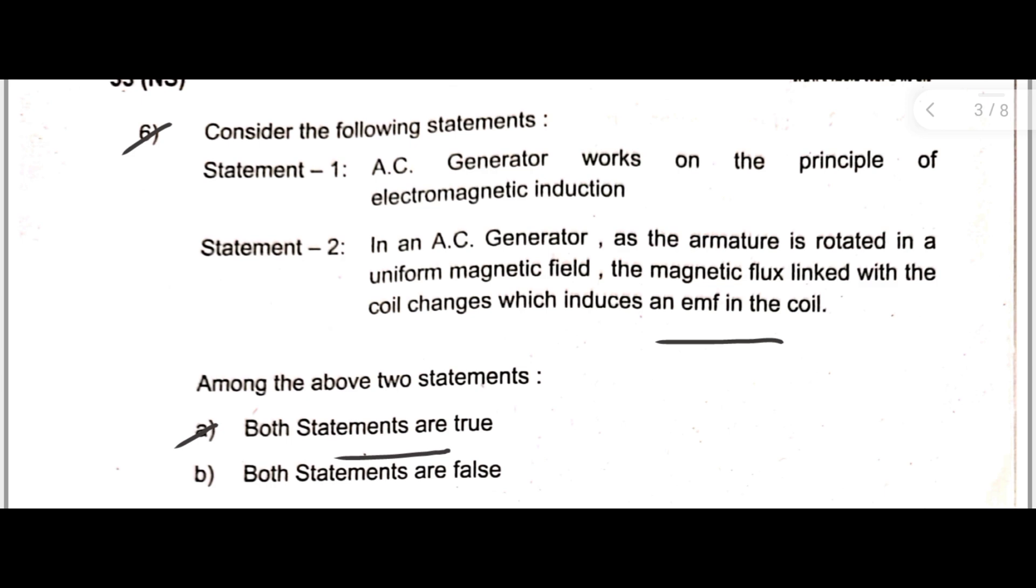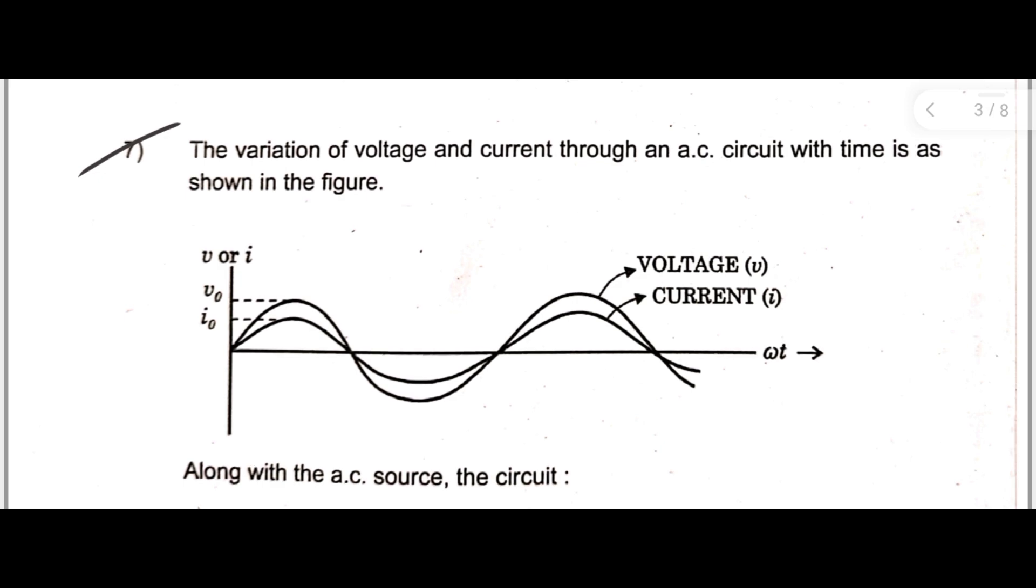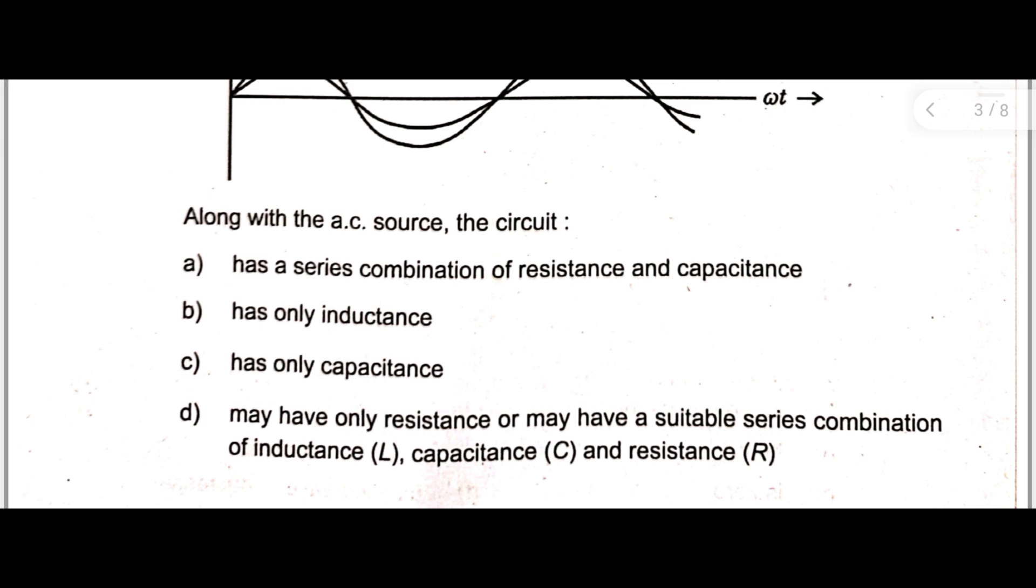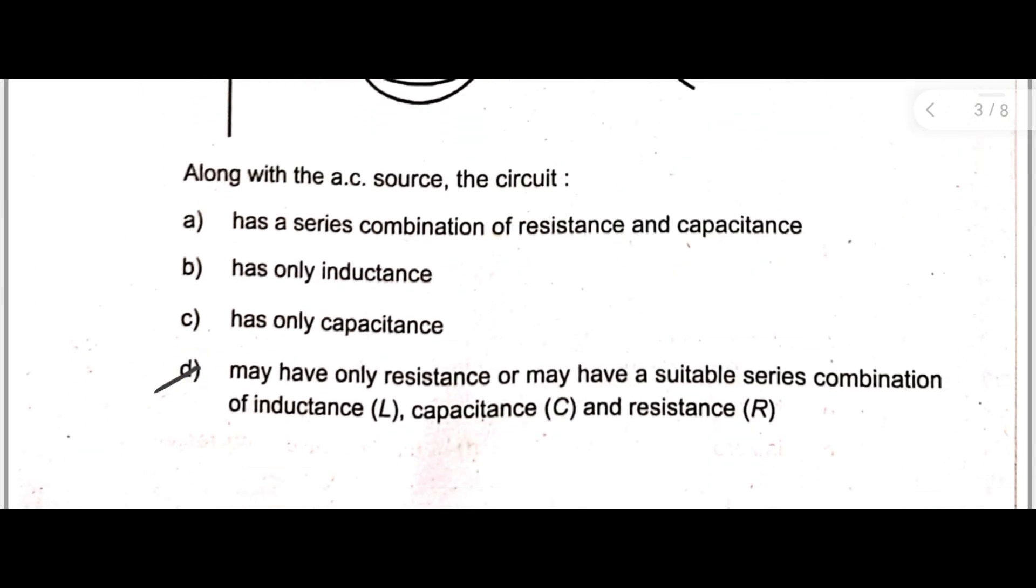Next, question number seven. The variation of voltage and current through an AC circuit with time is as shown in the figure. Along with the AC source, the circuit - option A: has a series combination of resistance and capacitance, B: only inductance, C: only capacitance, fourth one: may have only resistance or may have a suitable series combination of inductance, capacitance, and resistance. Here the correct answer is option D: may have only resistance or may have a suitable series combination of inductance, capacitance, and resistance.